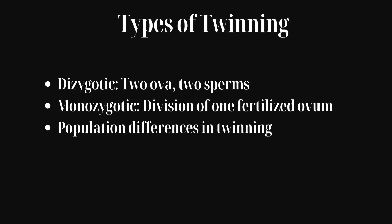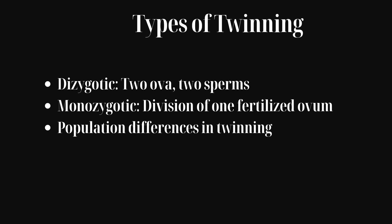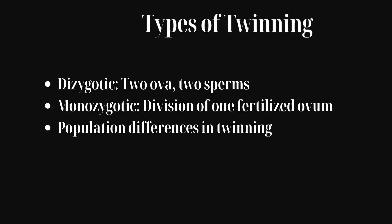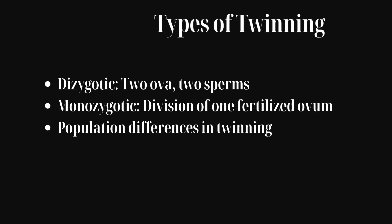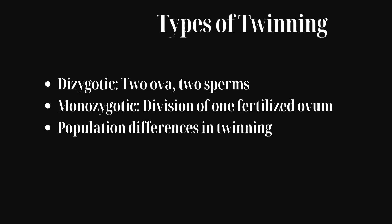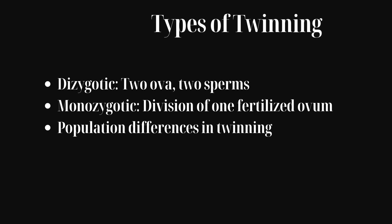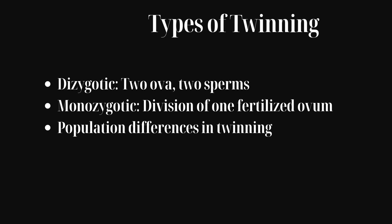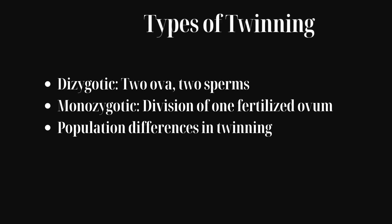Twinning can be categorized into two major types: dizygotic and monozygotic. Dizygotic twins, often called fraternal twins, result from two separate ova fertilized by two separate sperm, leading to genetically unique siblings. Monozygotic twins, or identical twins, occur when a single fertilized egg splits into two embryos. This type is less influenced by population differences, unlike dizygotic twinning, which is affected by factors such as maternal age, parity, and genetic predisposition.